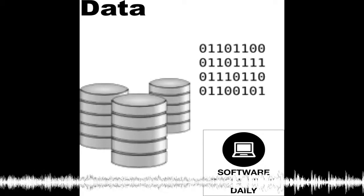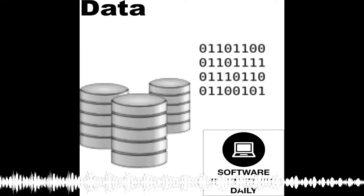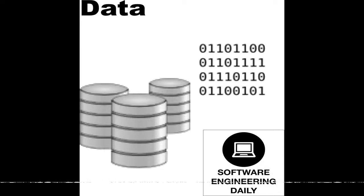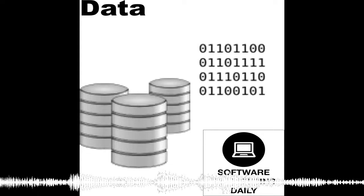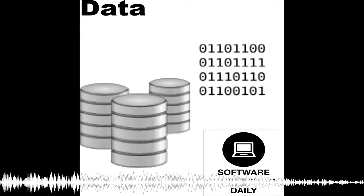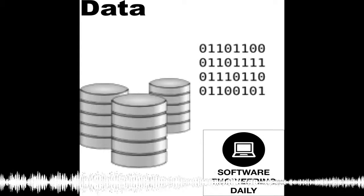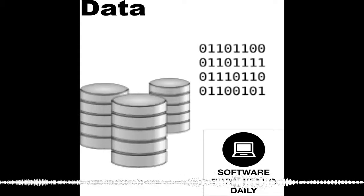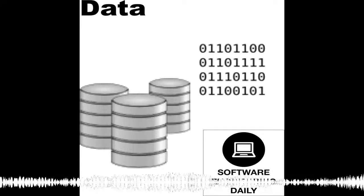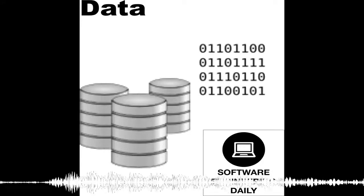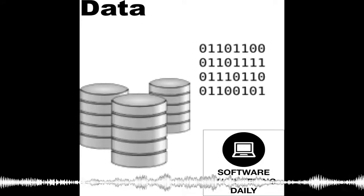Is Flink a generalization of Hadoop MapReduce? You can think of it like that, though in many ways Spark was also already a generalization. In the sense that Flink is a streaming framework and streaming is a superset of batch, you can think of it as a generalization.